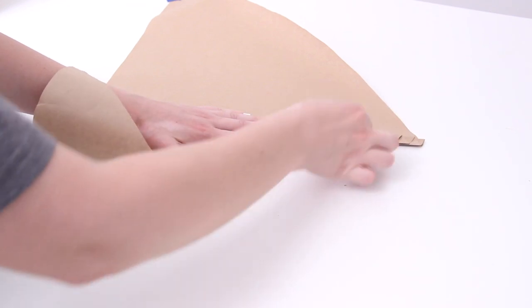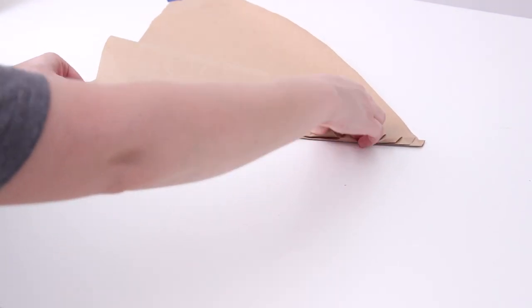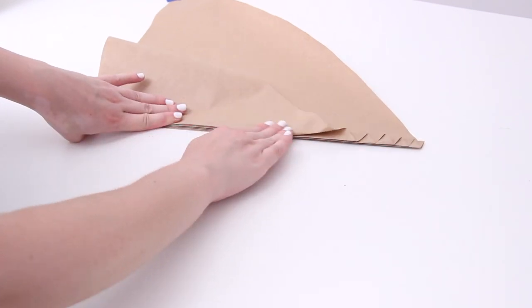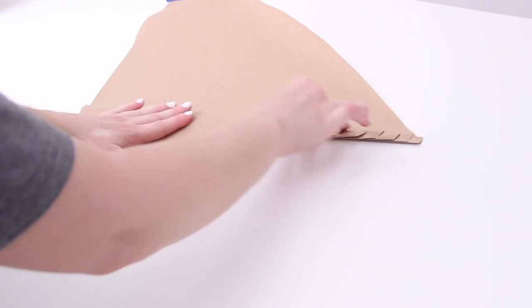Essentially, you're going to be taking that one side of your little dome shape and you're just folding it back and forth, back and forth in an accordion shape and making sure that it's smooth and try to keep the edges as even as possible.